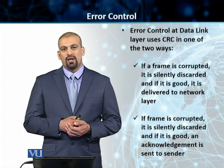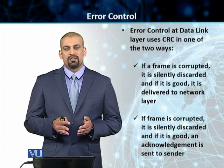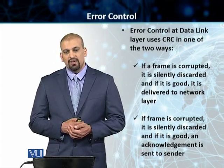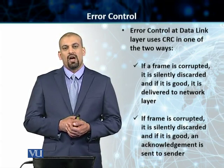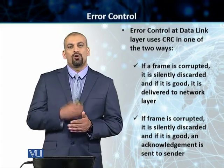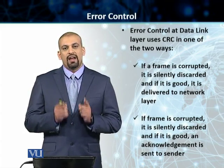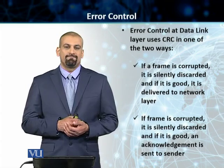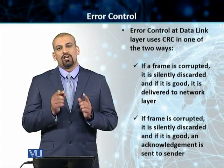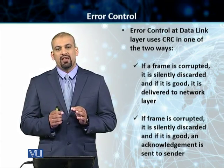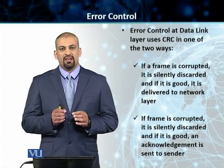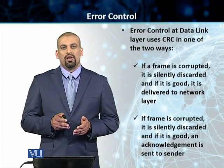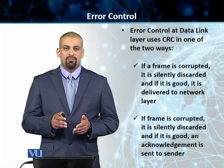The second scenario is the interesting one. In this case, if the frame is corrupted, it is silently discarded. However, if the frame is good and received, it is passed on to layer 3 and an acknowledgement is sent back to the sender to confirm the frame was received safely. This acknowledgement is called ACK, and it forms the basis of error control and flow control in the data link control sublayer.